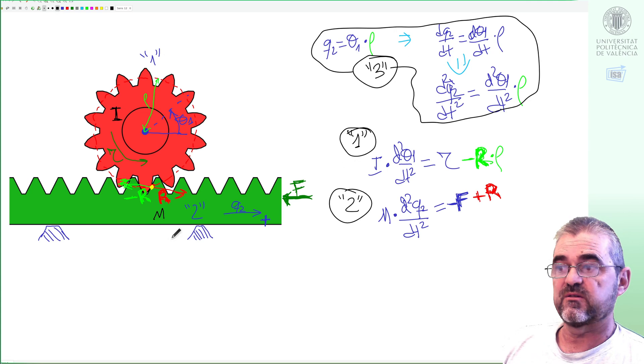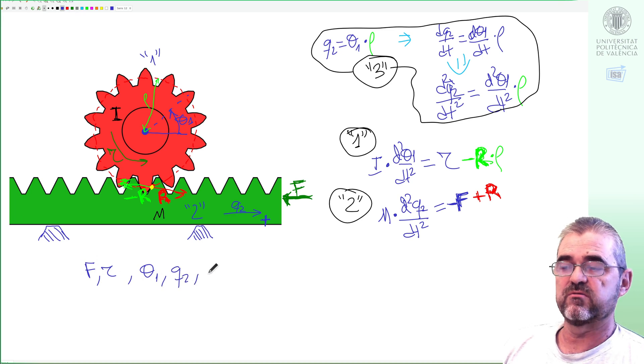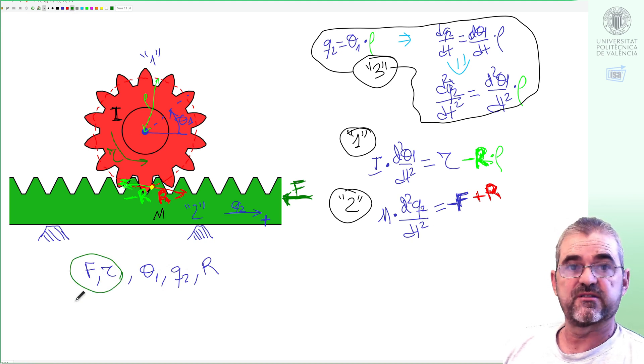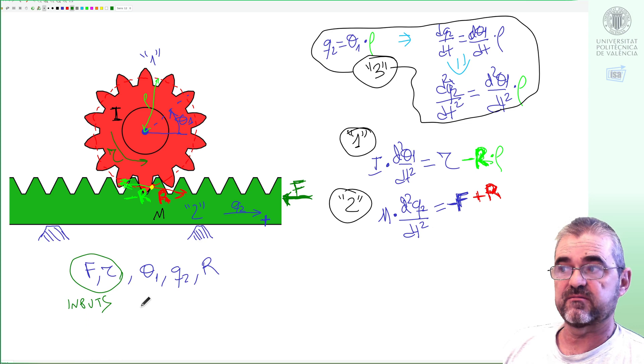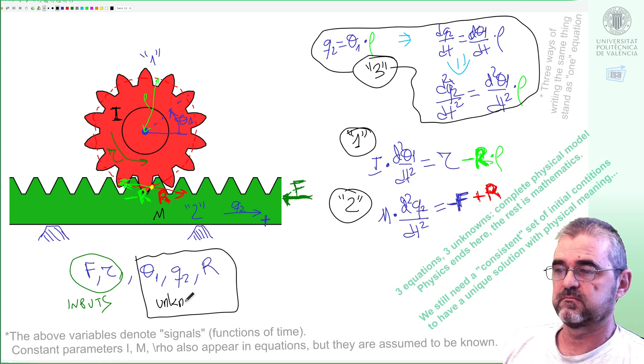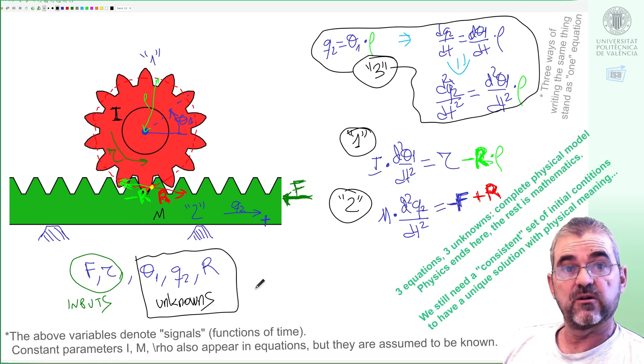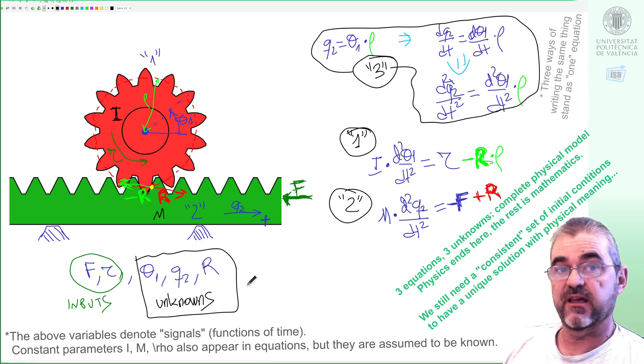Why is the model complete? Well because we have lots of letters: F, tau, theta 1, q2 and the reaction force R. But if we consider F and tau to be inputs that can take any arbitrary value, then these three signals will be unknowns and if I have three equations and three unknowns my mathematical model of this physical system is complete. So this is it, physics ends here. The remaining thing is just manipulating these equations to solve for the variable we wish.